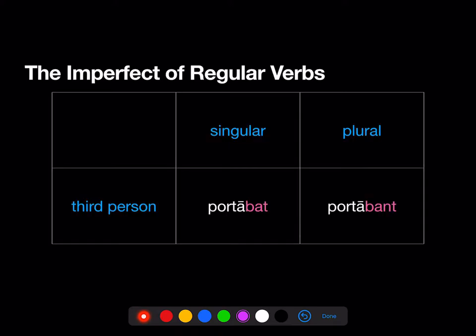So first, the imperfect of regular verbs. In the third-person singular, they end in -bat. In the third-person plural, they end in -bant. So, portabat — he, she, or it was carrying. Portabant — they were carrying.